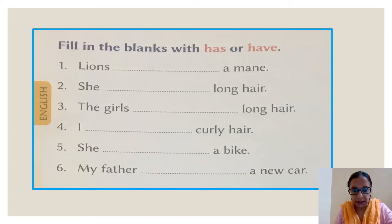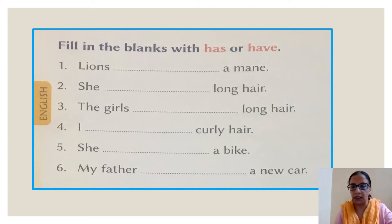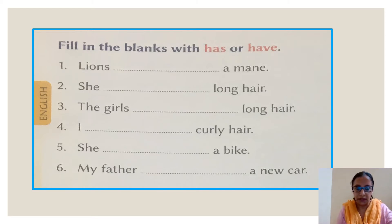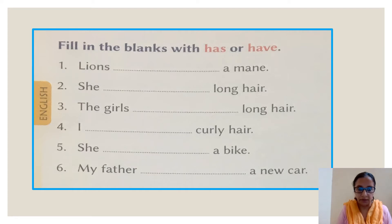The very first sentence: lines dash a main. Lines — that means more than one. We are talking about more than one line, so what will come? Lines have — have will come here. In the very first sentence you will write have. H-A-V-E. Have.